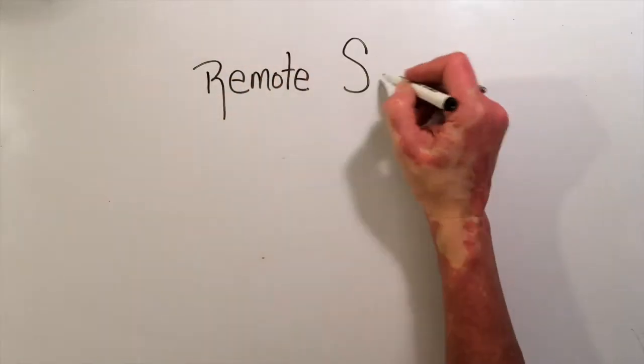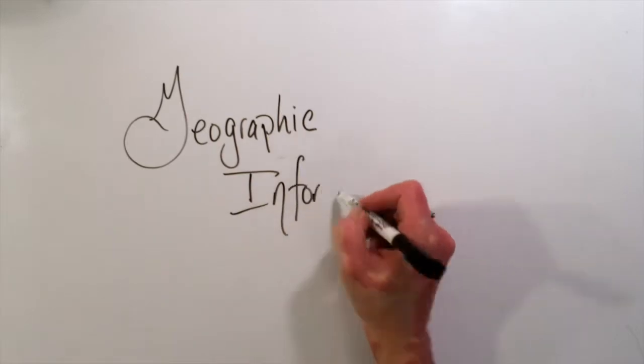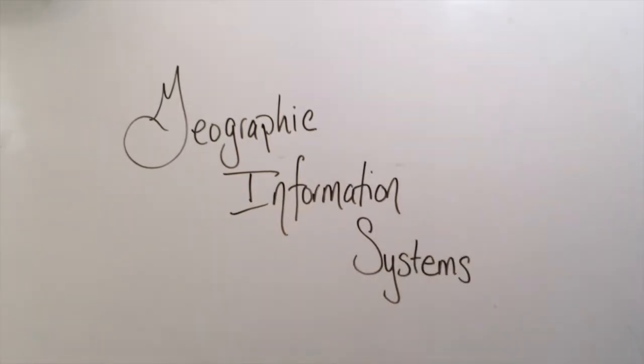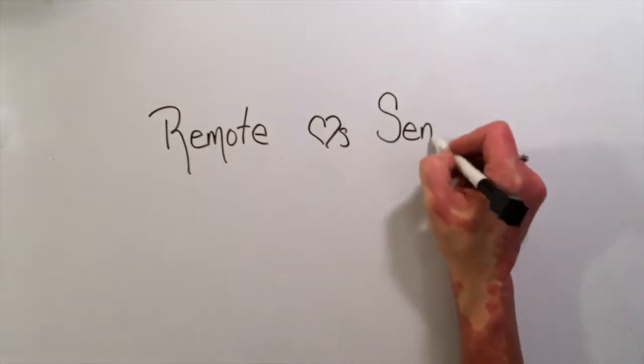So when you're doing your research, how do you show that two things belong together, like remote sensing or spatial analysis? You can even sometimes show that three things belong together, like geographic and information and systems. It doesn't have to be just two.